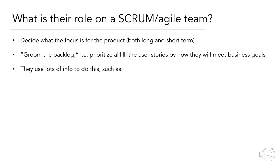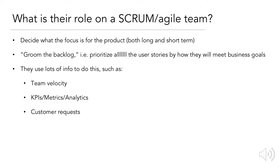They use lots of info to do this, such as team velocity — how quickly a team can move, how many developers you have, and how much work they can do in a certain amount of time. They also use KPIs or key performance indicators, metrics such as conversion, purchases made, money made, sales, and analytics, which are hooked into how users use your tool. So where are they clicking? Where are they getting lost? Things like that.